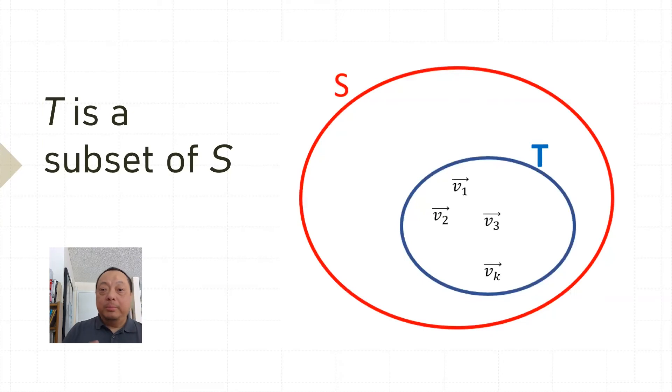Well, remember T is a subset of S. That means all the vectors v in T are also vectors in S. Thus S consists of all the v's in T and some more outside of T. Let's call them u1, u2 up to uh.